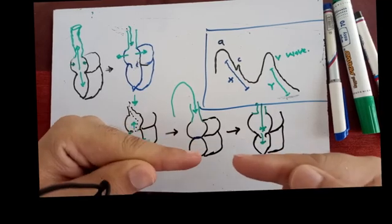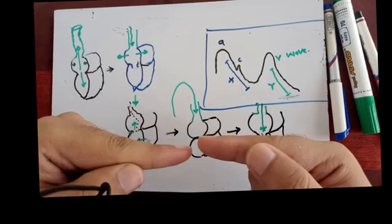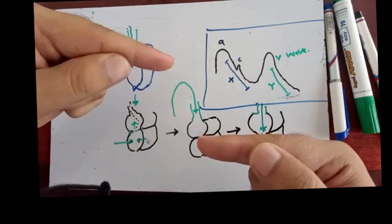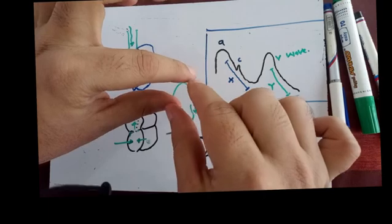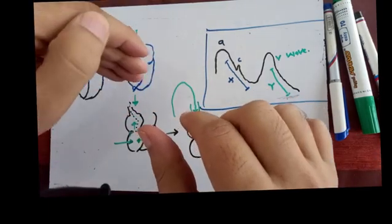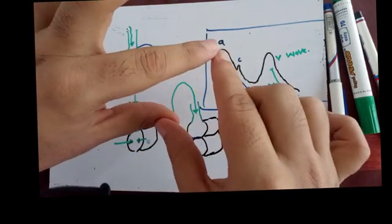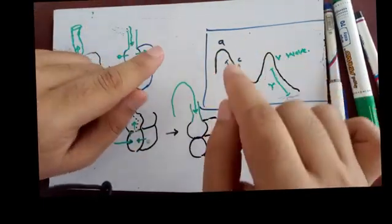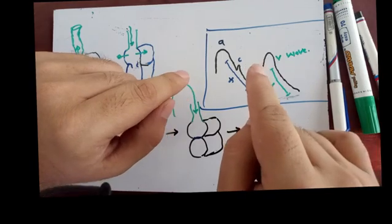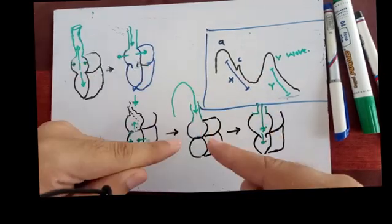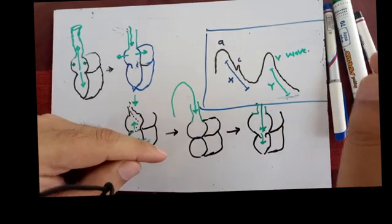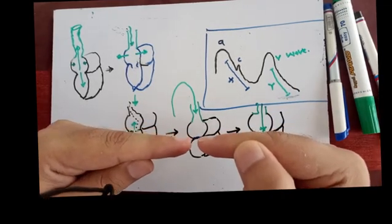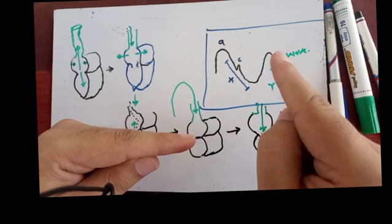The 'v wave' is produced while the tricuspid valve is closed and blood is returning from the body. A large amount of venous blood accumulates toward the jugular system against the closed tricuspid valve, raising pressure in the jugular vein. So the v wave is due to venous return against closed walls — this is the key concept.